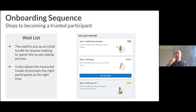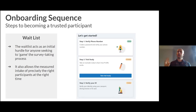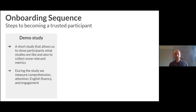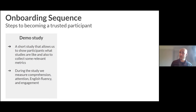Once a participant is invited off the waitlist, they have to complete three steps to actually become a participant: verify their phone number, take the trial study, and verify their ID. The trial study is a short study we designed internally at Prolific. It familiarizes participants with what it's like to take part in research generally, online specifically, and how Prolific works — but it also allows us to measure things about the participant to decide if they're a good or bad participant.